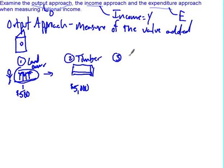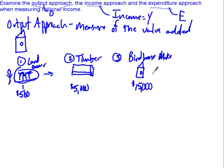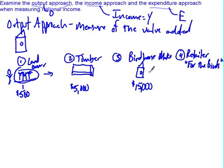Then we have the birdhouse maker, who buys all $5,000 worth of wood from the timber company and turns it into birdhouses. The value of the birdhouses they produce is $15,000. Finally, the retailer — let's call it 'For the Birds' — buys the birdhouses and prices them to sell for a total of $25,000.